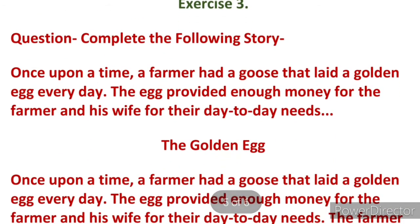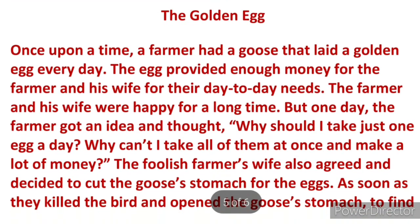The third exercise is similar. A picture can be given — for example, a thirsty crow with an empty pot with a little water — and based on that picture you have to write a story. Here the story is about the golden egg, which is a very famous kind of story.